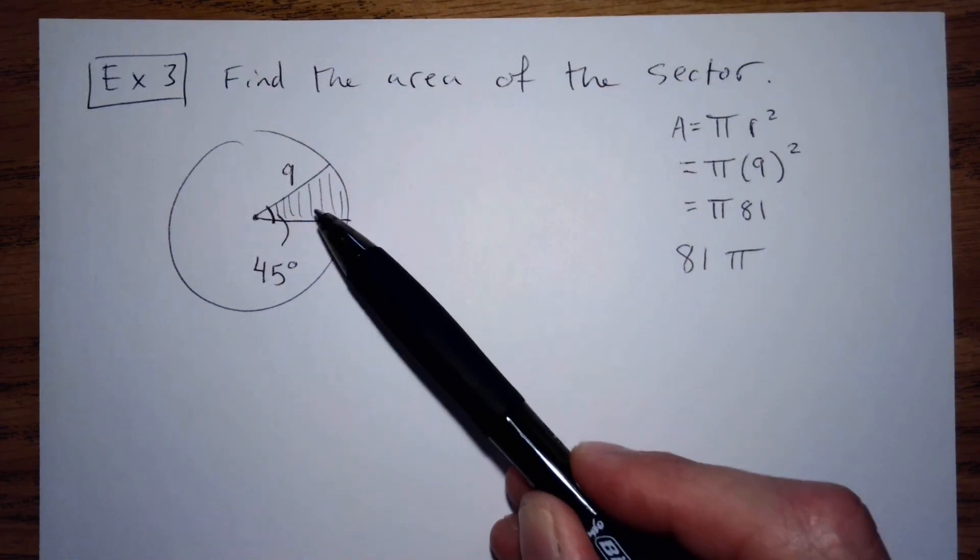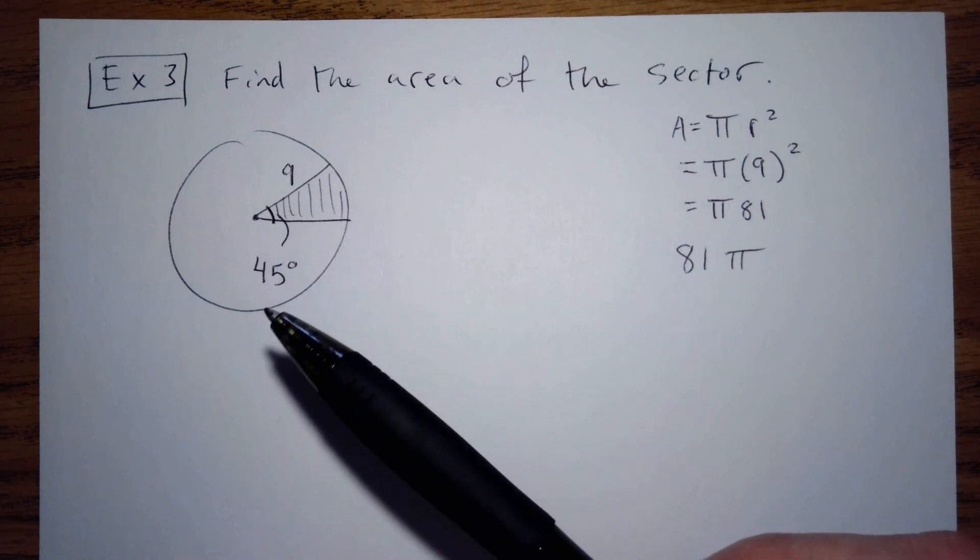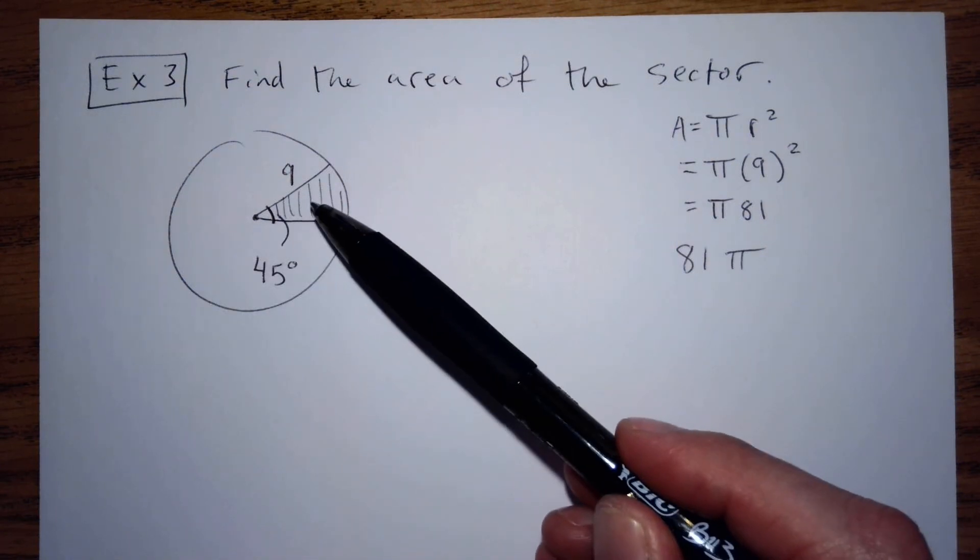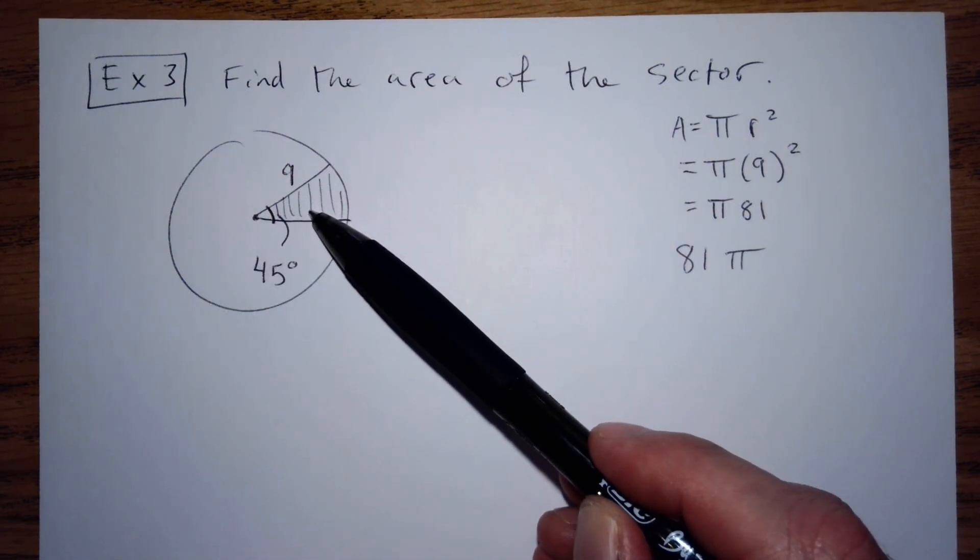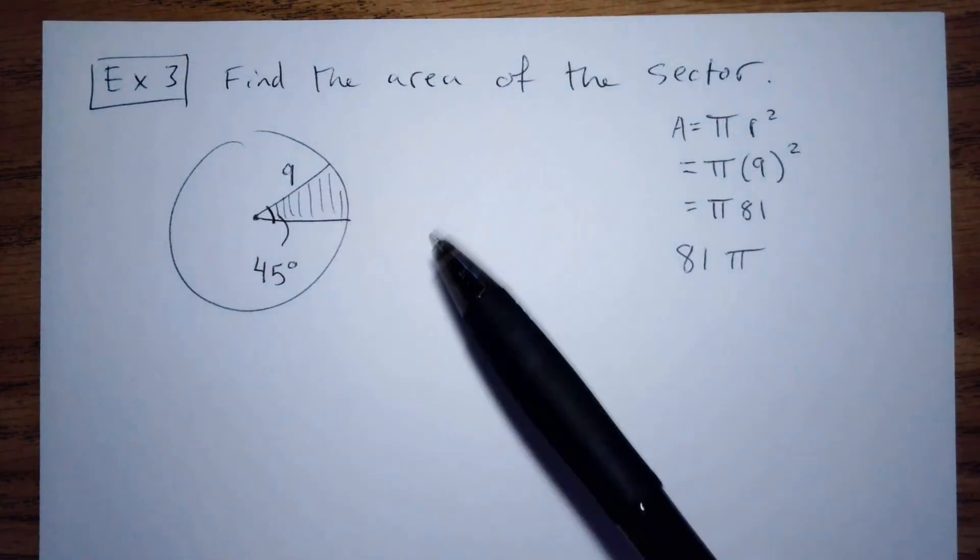Because we're trying to find the area of the sector, which is smaller than the entire circle. Is this sector bigger than, equal to, or smaller than half the circle? It's definitely smaller than half the circle. Half would have been the whole top part.